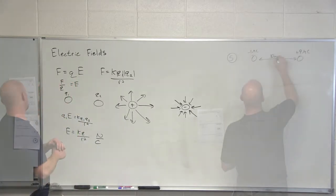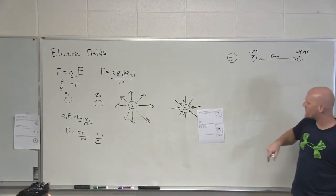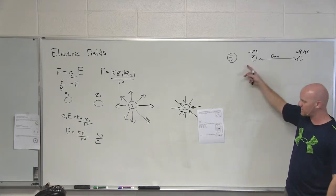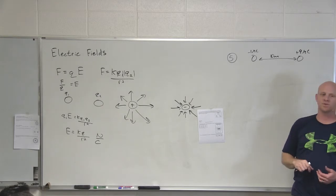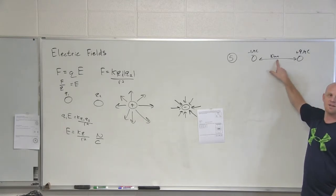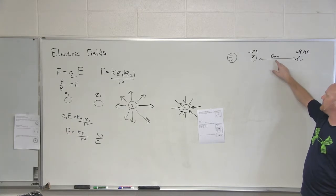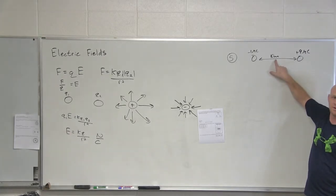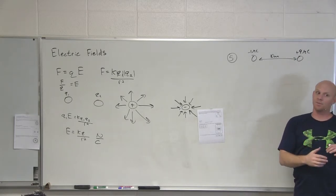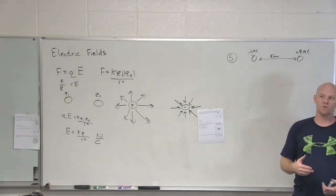So for number five, we've got a negative one microcoulomb charge and a positive nine microcoulomb charge. The question is: at what location along the x-axis is the electric field zero? If we pick a point in the middle, why might it feel an electric field? Both charges are causing an electric field there — one might have a bigger impact than the other depending on the magnitude of the charge as well as how far away it is.